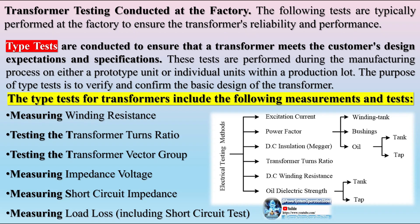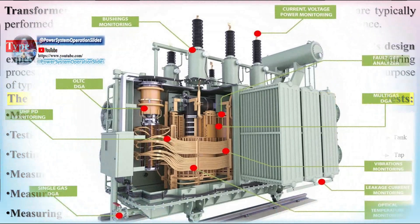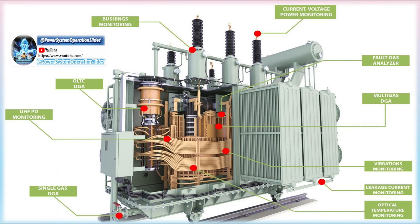The type tests for transformers include: measuring winding resistance, testing the transformer turns ratio, testing the transformer vector group, measuring impedance voltage and short circuit impedance, measuring load loss including short circuit test, measuring no load loss and current including open circuit test, and measuring insulation resistance.